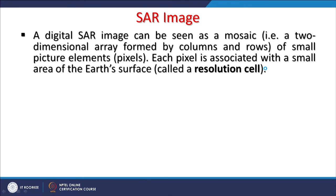The term SAR stands for Synthetic Aperture Radar — a radar synthesized in space because a large antenna cannot be physically carried in space. A SAR image can be seen as a mosaic: a 2-dimensional array formed by columns and rows, as in normal raster data, of small picture elements called pixels. Each pixel is associated with a small area of the Earth's surface called a resolution cell or spatial resolution. These cells are square in shape, representing parts of the Earth such as 10 m × 10 m or 30 m × 30 m.